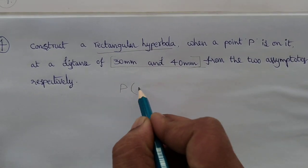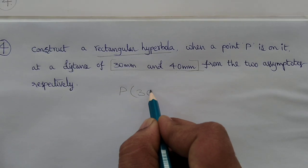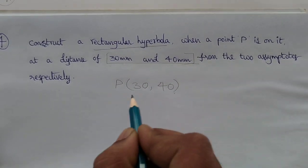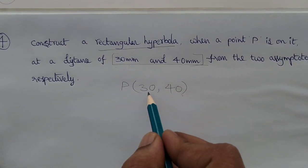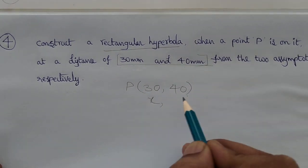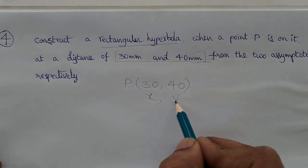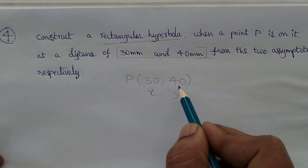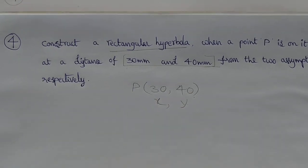That means these are the coordinates of the point P. So we can say P(30, 40). On the x-axis we should mark 30 mm. Similarly on the y-axis, that means the y-asymptote, we should mark 40 mm. That is what we are going to construct.